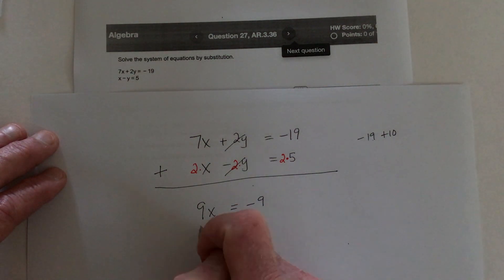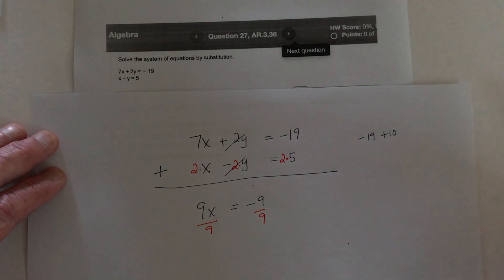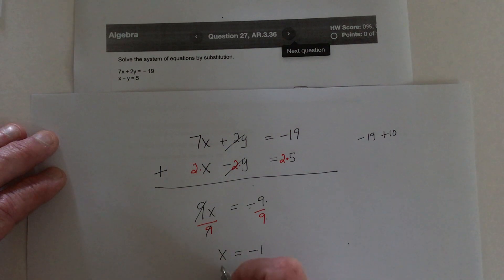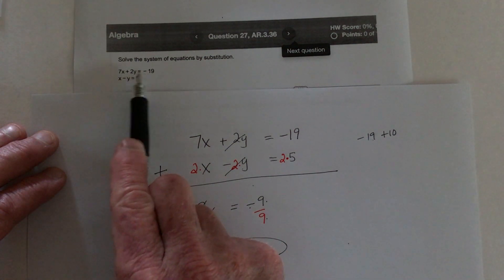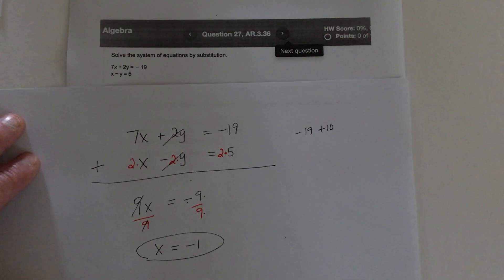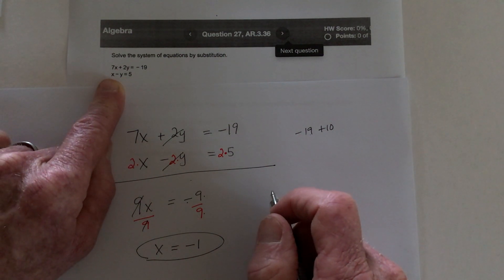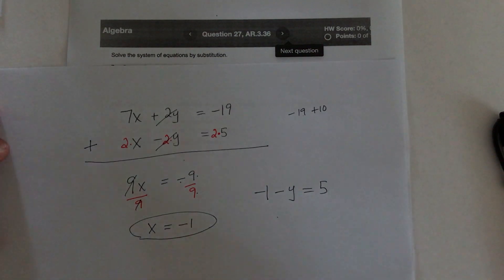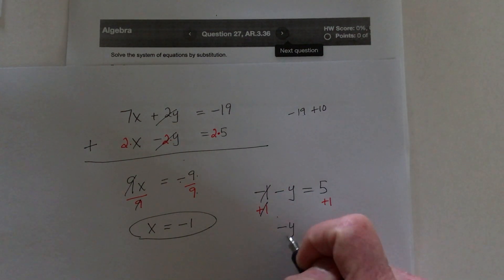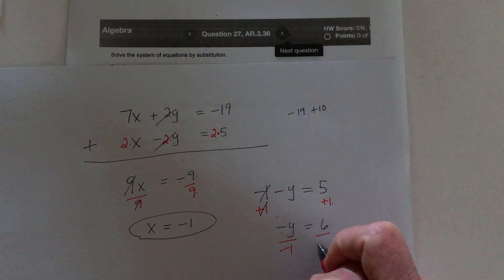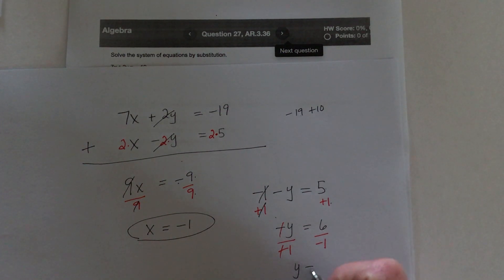We only need to do one step to solve for x: divide both sides by 9. On the left these cancel, leaving us only x. And on the right, negative 9 divided by 9 is negative 1. After you find out what x equals, you could plug it into either equation to find out what y equals — you should probably use the easier one. I'm going to use the bottom one: replace x with negative 1, so negative 1 minus y equals 5. Add 1 to both sides and they cancel, so negative y equals 6. Then get rid of this negative by dividing both sides by negative 1, and we get y equals negative 6.